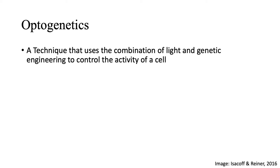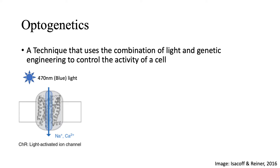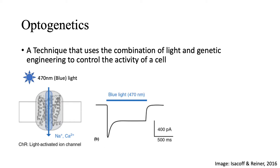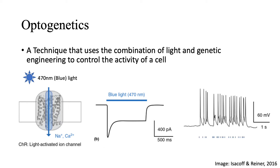Optogenetics is a technique that uses the combination of light and genetic engineering to control the activity of a cell. How it works is that a light-gated ion channel, often called an opsin, is expressed in a specific cellular population of interest. For this example, we are looking at channelrhodopsin, which is a cation channel activated by blue light. If you are recording in whole cell voltage clamp mode from a neuron expressing channelrhodopsin, application of blue light on this neuron will produce a large inward excitatory current. In current clamp, this stimulation is enough to produce action potential firing. Thus, optogenetics allows scientists to artificially activate neurons using blue light to test any ideas regarding their activity.